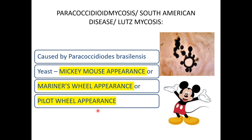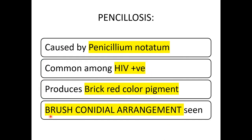Paracoccidioidomycosis is a South American disease, also known as Lutz mycosis, caused by Paracoccidioides brasiliensis. It shows Mickey Mouse appearance, mariner's wheel appearance, or pilot wheel appearance — the multiple budding yeast cells arranged around a central cell resembling a ship's steering wheel.